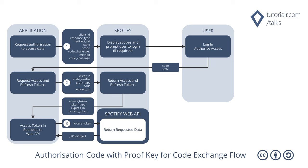Authorization code flow with proof key for code exchange is the best option for mobile and desktop applications and provides an access token that can be refreshed. First, create the code verifier, a cryptographically random string, then hash with SHA256 and Base64 URL encode this to create the code challenge, and construct and redirect to the authorization URI where the user logs in and authorizes access. Next, use the code returned in the redirect URI to exchange for an access token and refresh token. Then use the access token to access the Spotify Web API, which is set to expire after a short time. Finally, when needed, request a refreshed access token.